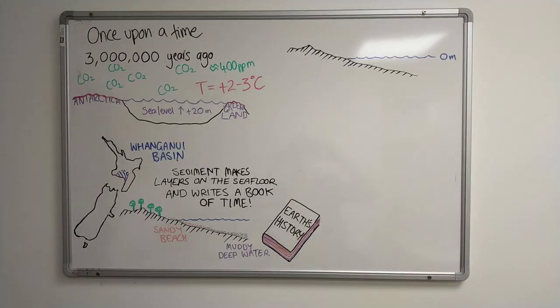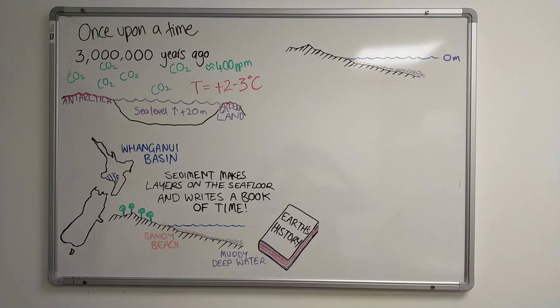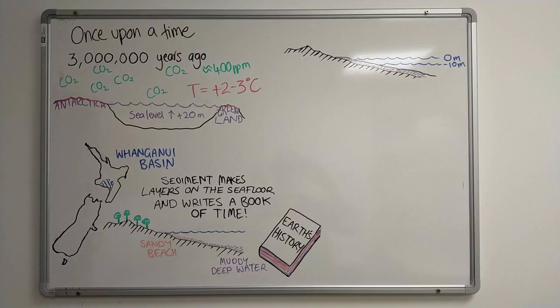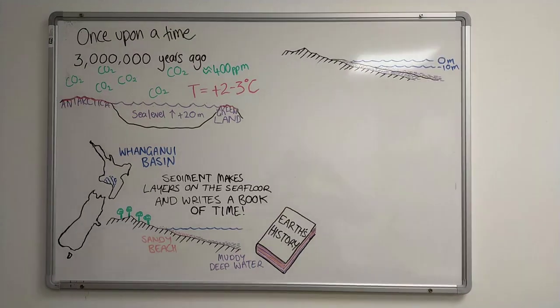We can use these layers to tell us about past sea level change. The layers of sediment tell us where the beach was and how high sea level was. As sea level lowered, a new layer of sediment is deposited on top of the previous layer.